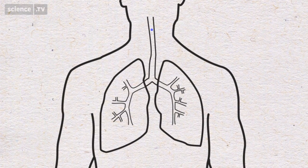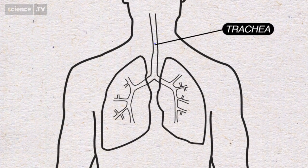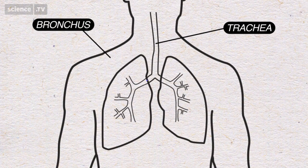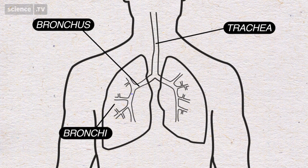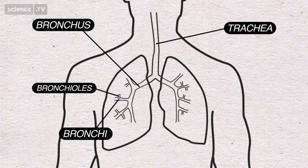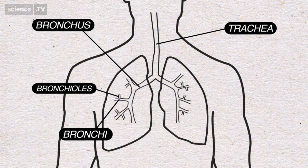As we breathe in, air travels down the trachea, bronchus, bronchi to the tiny bronchial tubes, and the whole point of this is to get fresh air into the alveoli.